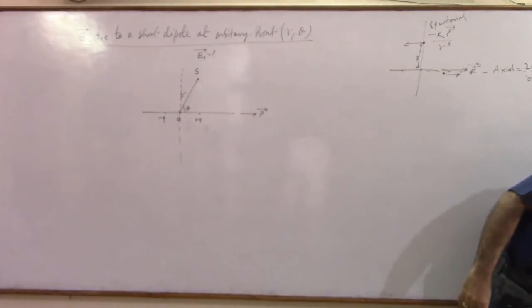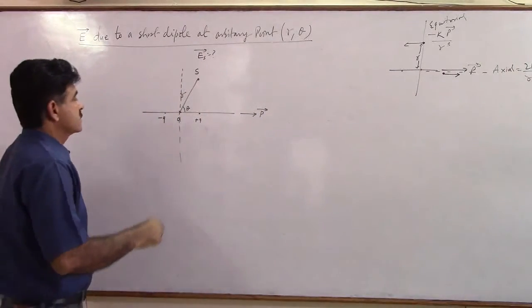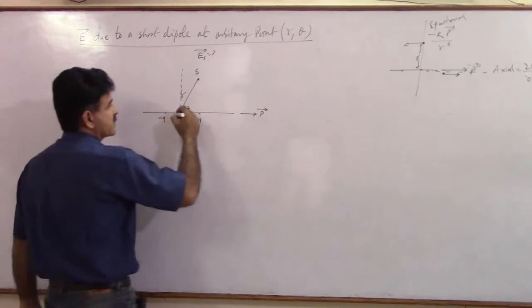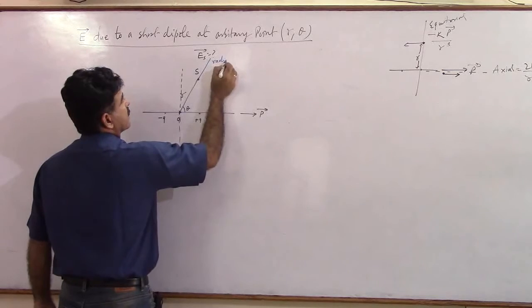To begin with, I introduce you to two more lines. The center, you extend this through the point of observation. Let us call this line as radial line.